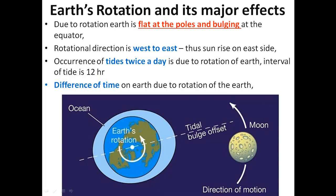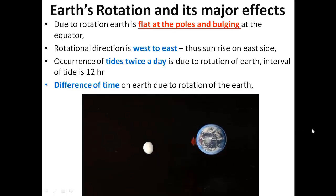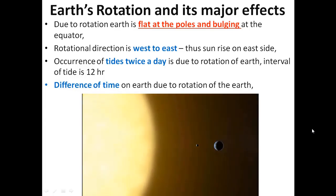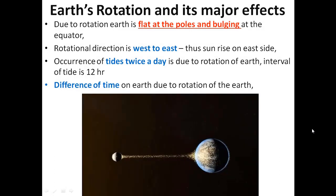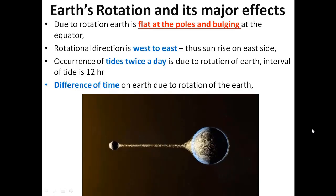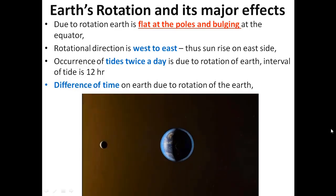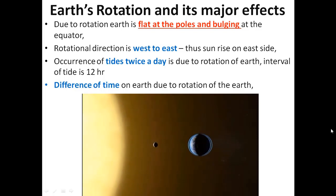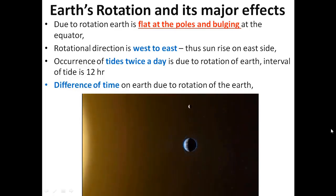There is one more very important occurrence due to the rotation of the Earth: the difference of time. Now we will watch a video clip to understand why the Earth is flat at the poles and bulging at the equator during tides. As you can see the Earth, Moon, and Sun in one line — their combined gravitational pull attracts the oceans, triggering tides. The rotating Earth flings ocean water toward the rotational point, and as the Moon shifts position, the tidal apex also shifts.